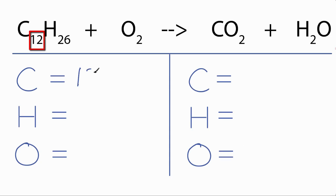We have 12 carbons, we have 26 hydrogens, and 2 oxygens on the reactant side. On the product side, we have 1 carbon, we have 2 hydrogens, and we have 2 plus the 1 oxygen, giving us 3 oxygens.